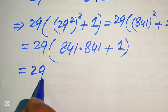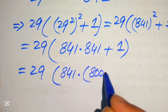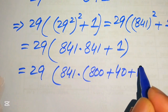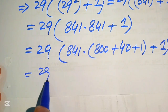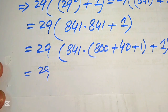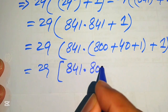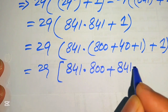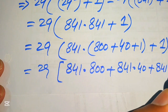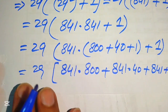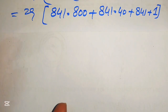To compute 841 squared, we break 841 as 800 plus 40 plus 1. We multiply 841 separately by each of these values, giving 841 times 800 plus 841 times 40 plus 841 times 1, and at the last we add 1.